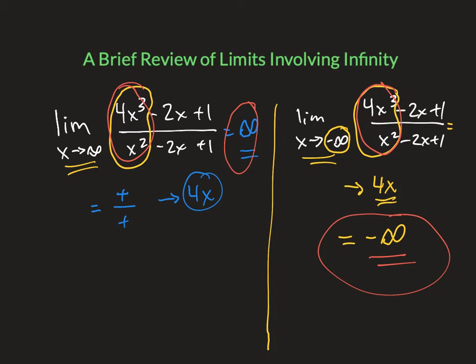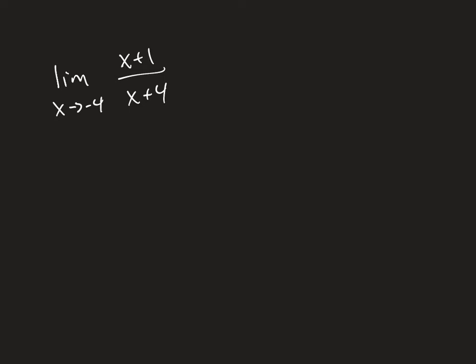Hopefully that helps clear up how to pick positive infinity or negative infinity. Now let's see what happens when we have a vertical asymptote. Here's a limit where x is approaching negative 4 of x plus 1 over x plus 4. When you do your substitution, you get negative 4 plus 1 in the numerator, which is negative 3, and in the denominator negative 4 plus 4, which is 0. This undefined value means we have a vertical asymptote at x equals negative 4.